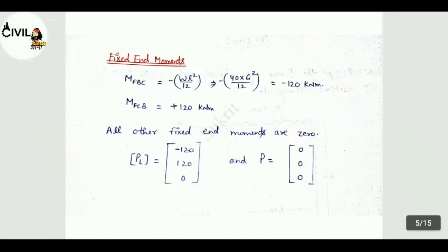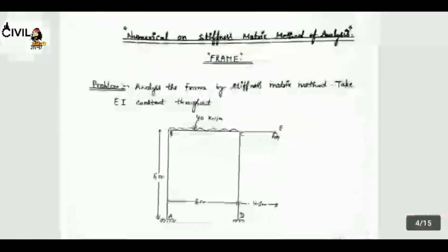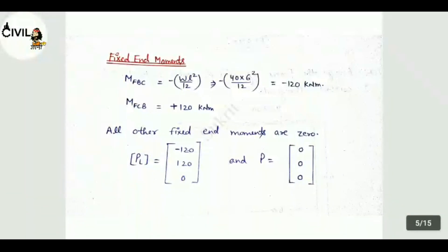Next up are fixed end moments. The fixed end moments will be zero except MF_BC and MF_CB. MF_BC for UDL will be minus WL²/12, which equals minus 40 into length 6, 6² divided by 12. So MF_BC equals minus 120 kNm. MF_CB will be same but with opposite sign, MF_CB equals plus 120 kNm. All other fixed end moments are zero. So P equals 0, 0, 0. Now matrix [PF] becomes minus 120, 120 and 0. No other final forces, so P equals 0, 0, 0.